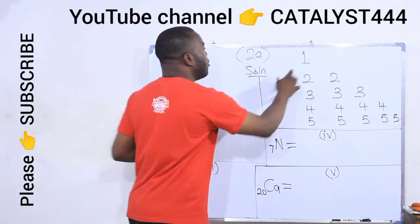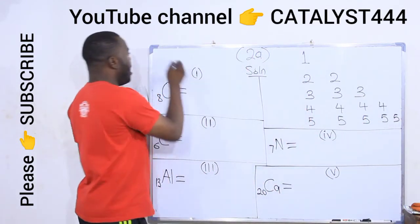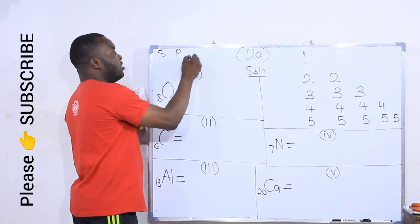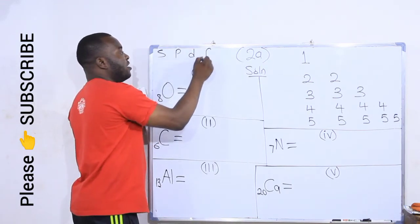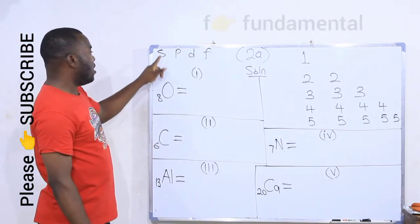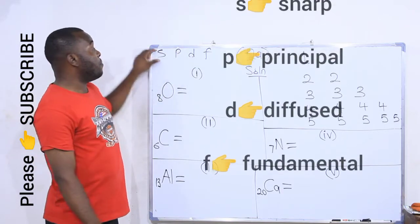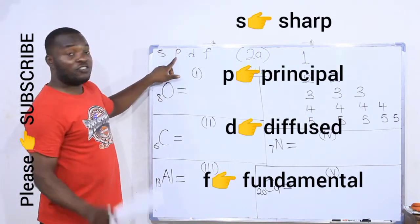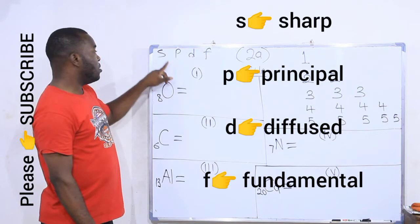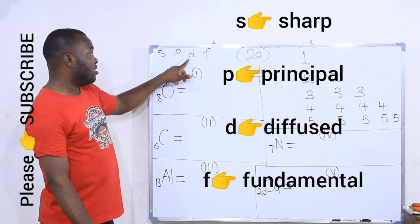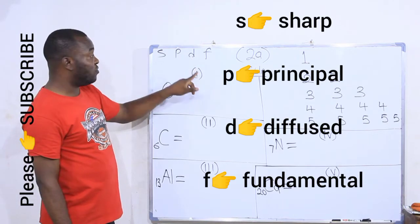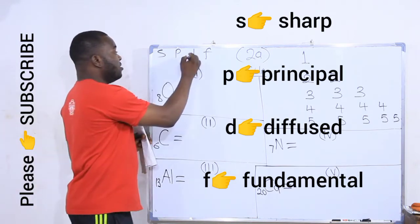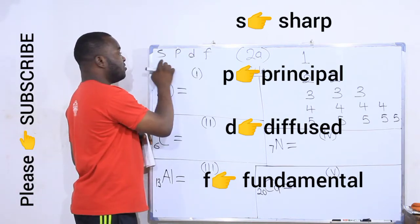The orbitals are: s orbital, p orbital, d, and f — in this order: s, p, d, f. Remember, s means sharp, p means principal, d means diffused, and f means fundamental. These are the orbitals in order.